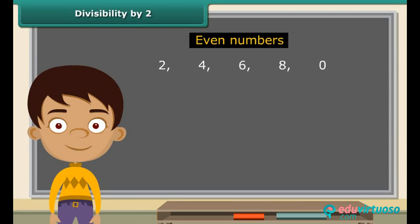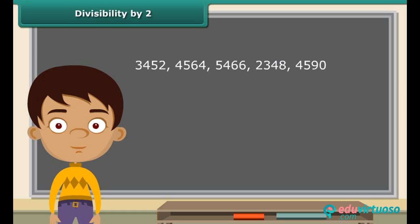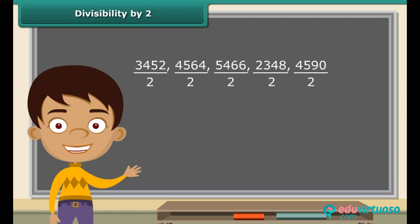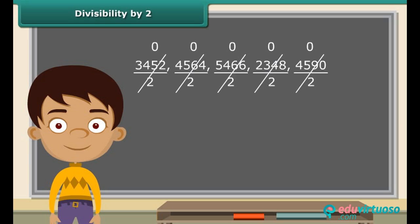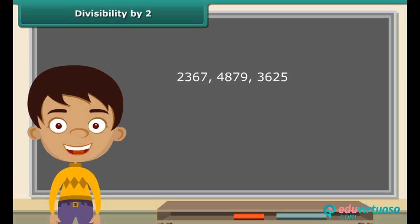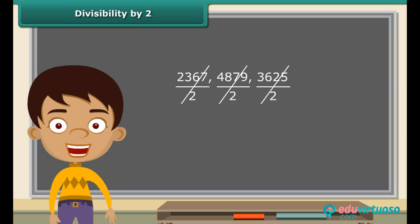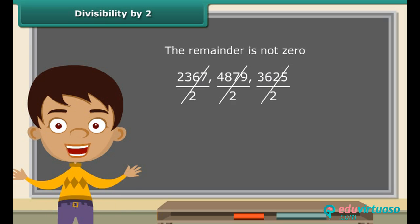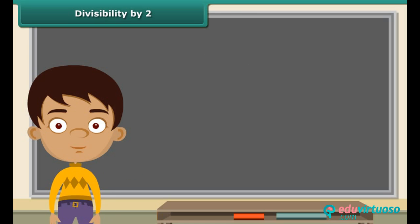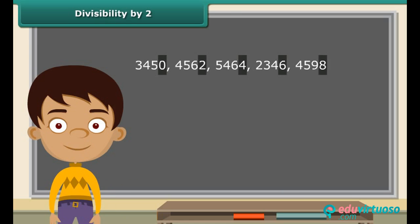Anuj knows that all numbers that end with two, four, six, eight or zero are even numbers. He randomly picks up some numbers that end with these digits and divides them by two. He observes that each of these leaves a remainder of zero. He then picks numbers not ending in those digits and divides by two — all leave a non-zero remainder. Therefore, a number is divisible by two if it has the digit zero, two, four, six, or eight in its ones place.